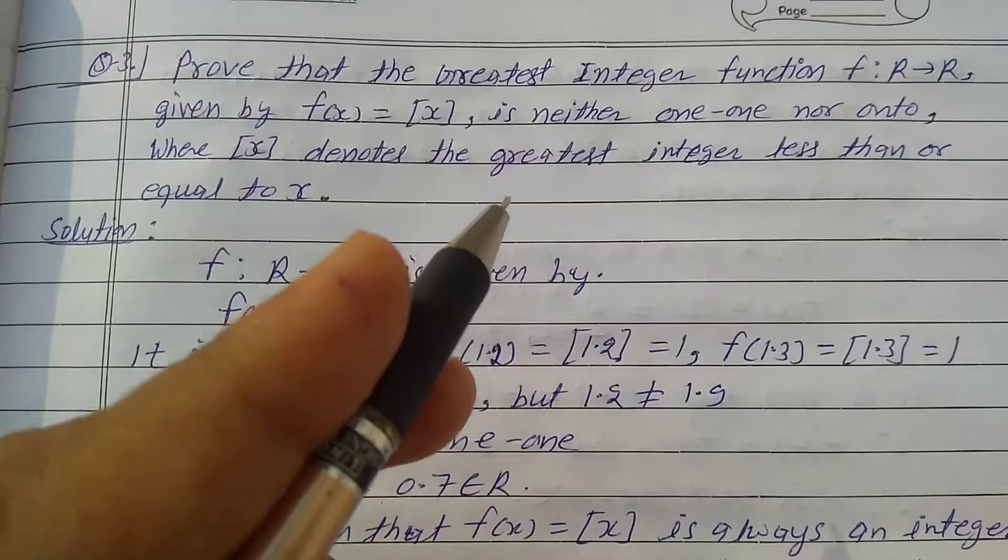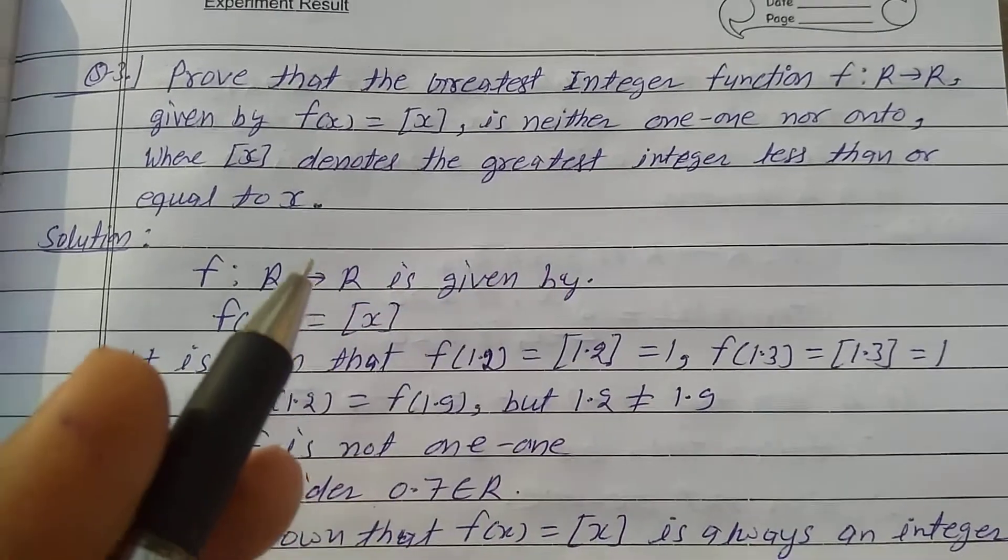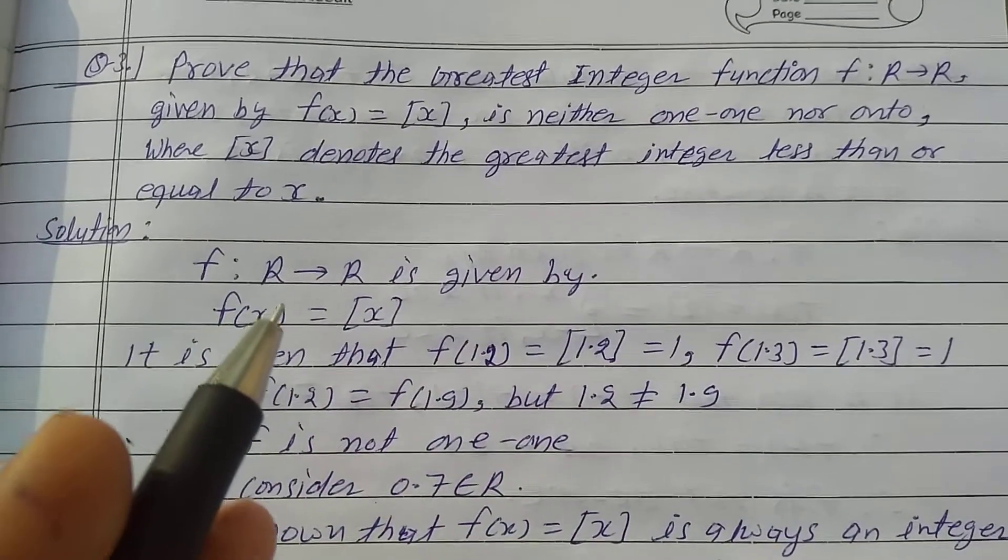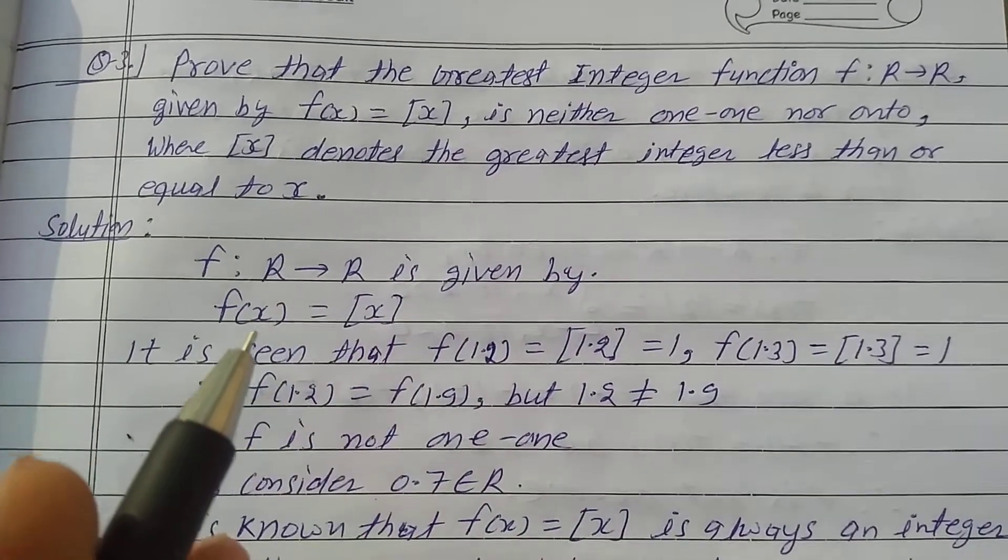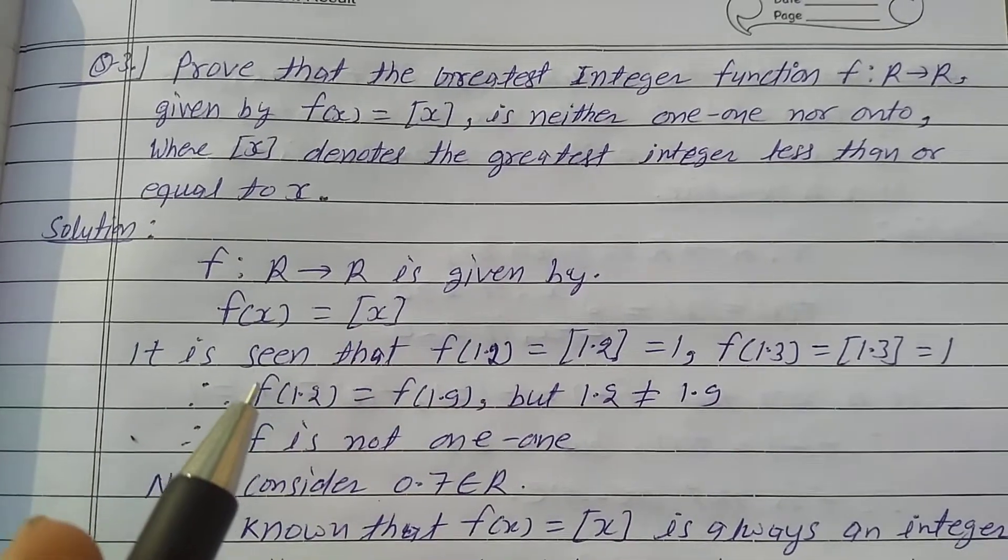Here [x] denotes the greatest integer less than or equal to x. Solution: f: R→R is given by f(x) = [x].